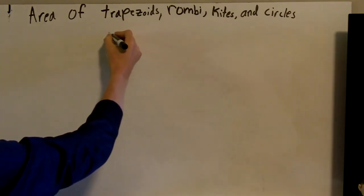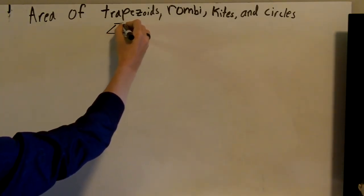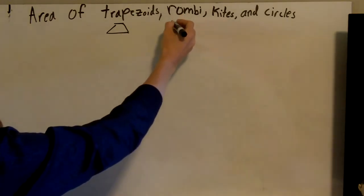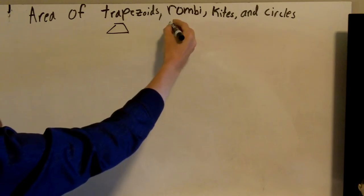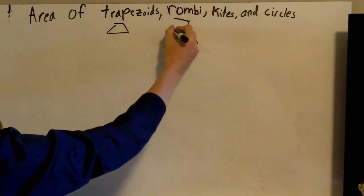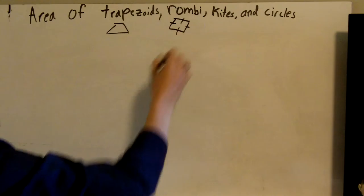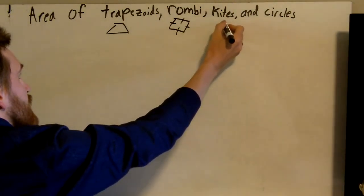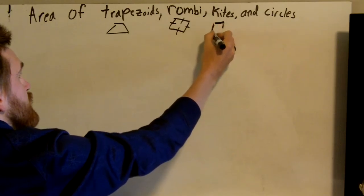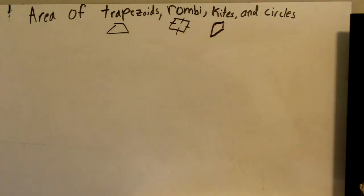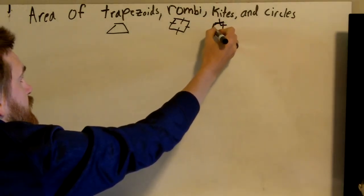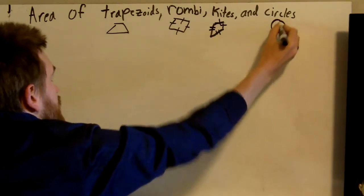A trapezoid is a four-sided shape with two sides that are parallel and two sides that aren't. A rhombus, or rhombi is the plural form, is a four-sided shape where all sides are congruent and parallel. A kite has two sets of congruent sides and they are consecutive congruent sides. So this is congruent to this and this is congruent to this, and then obviously a circle.